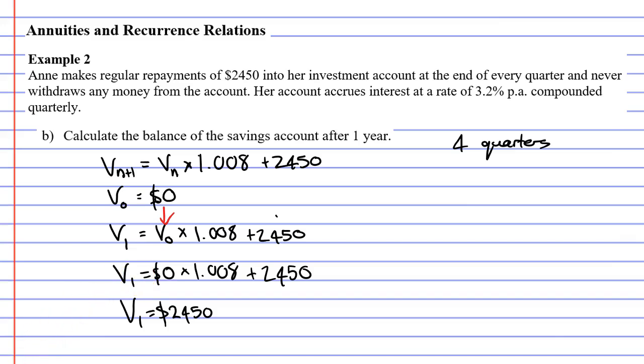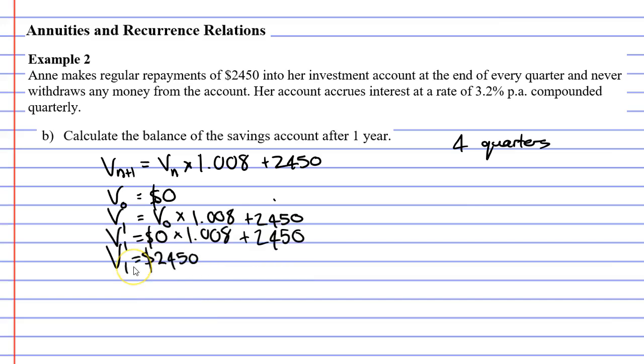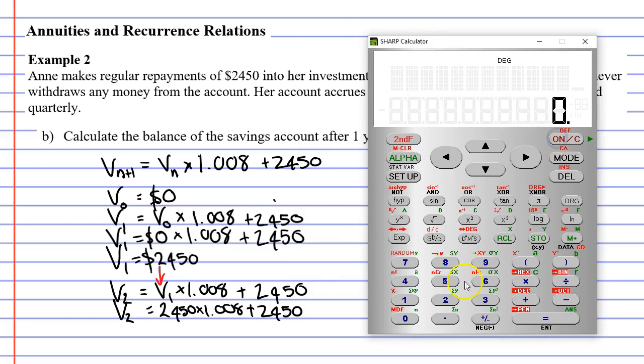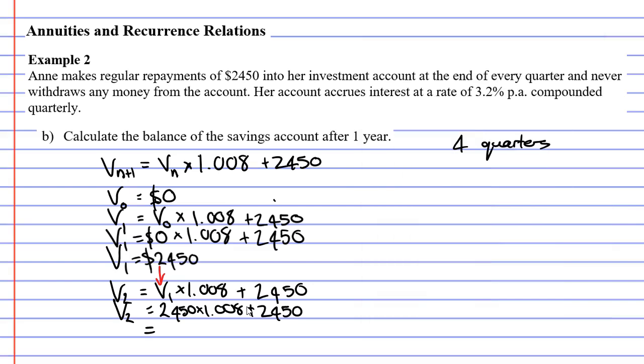Now, before I move on to V2, I'm noticing that I'm using up too much space. So I'm going to compress things a little. To find V2, I know that I'm going to put V1 to the right because the subscript to the right is always one less than the subscript to the left. I then multiply V1 by 1.008 and add $2,450. So what is V1? Well, it is taken from the previous result. We found out V1 before was $2,450. When we substitute it in, V2 will equal 2,450 times 1.008 plus 2,450. Bringing up our calculator, let's see what we get. $2,450 times 1.008 plus 2,450 and it comes out to $4,919.60.